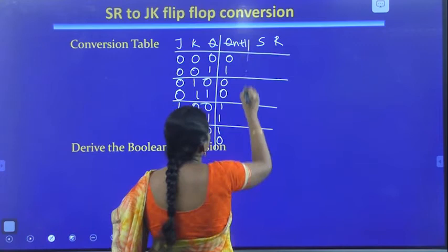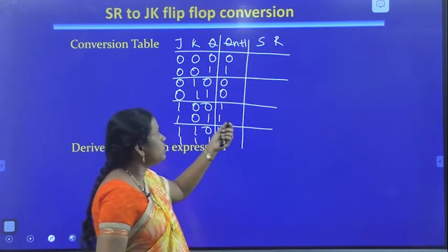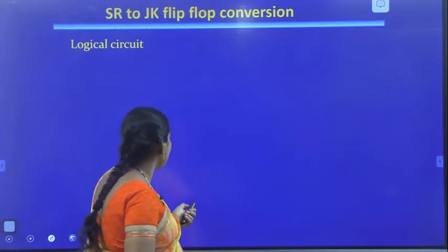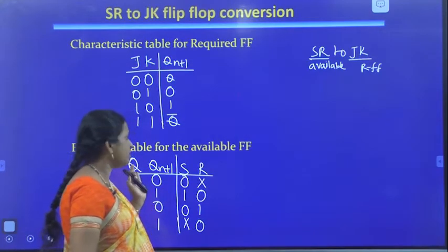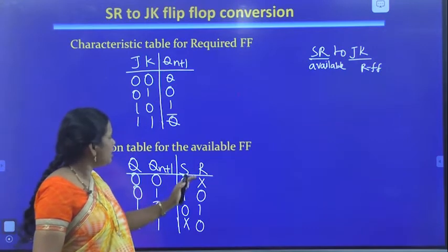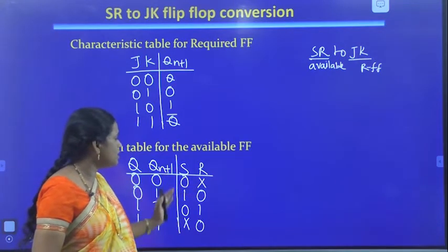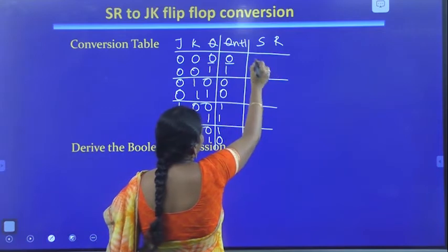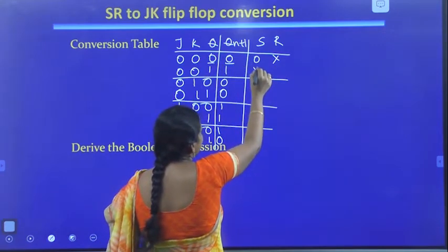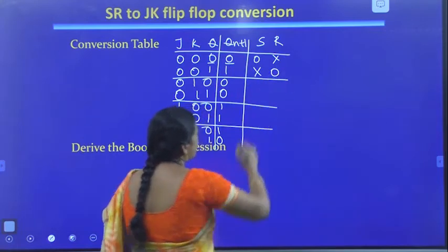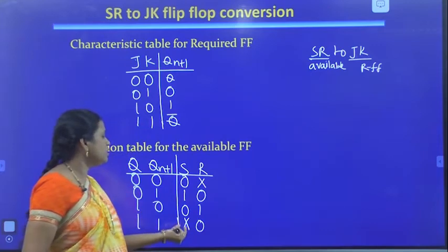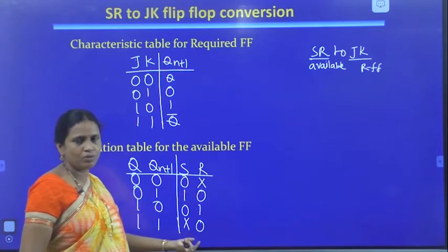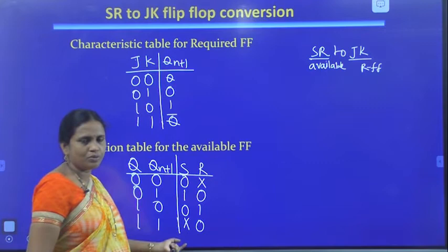Now let us write the SR values. To determine S and R, we look at Q and Q(N+1) and refer to the SR excitation table. For Q=0, Q(N+1)=0: S=0, R=don't care. For Q=1, Q(N+1)=1: S=don't care, R=0. For Q=0, Q(N+1)=1: S=1, R=0. For Q=1, Q(N+1)=0: S=0, R=1.